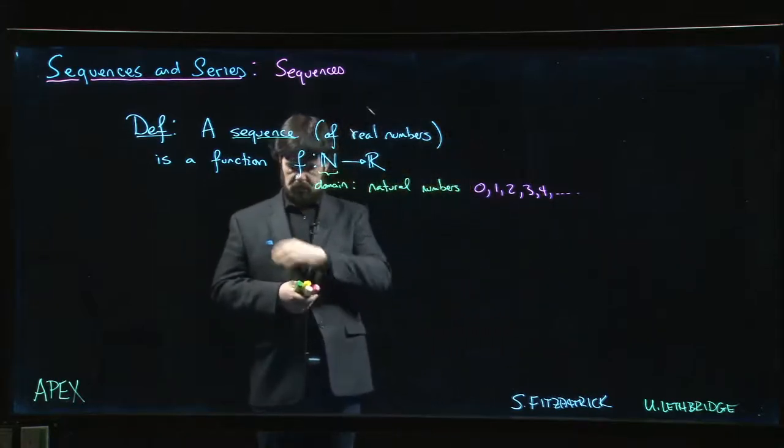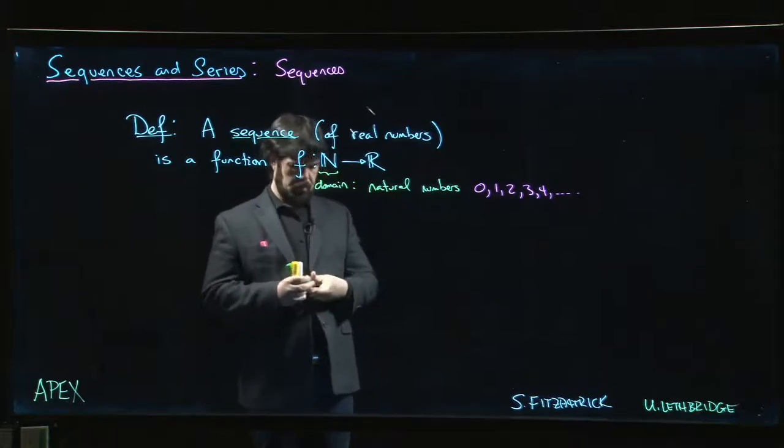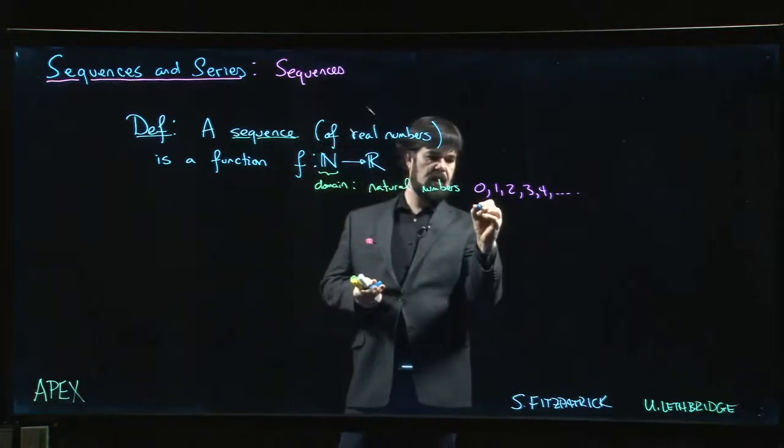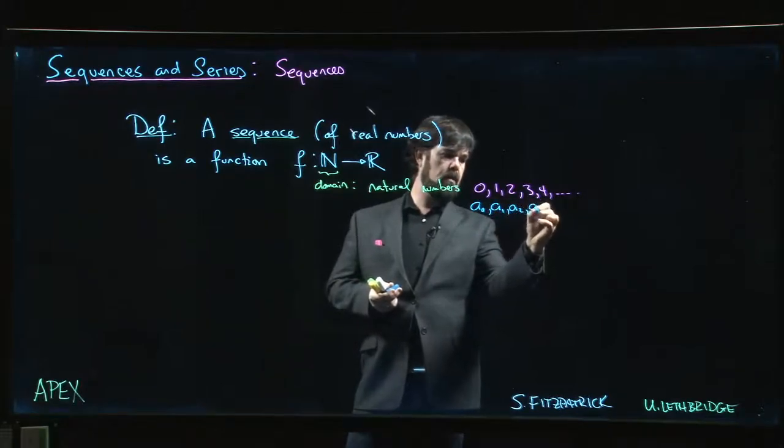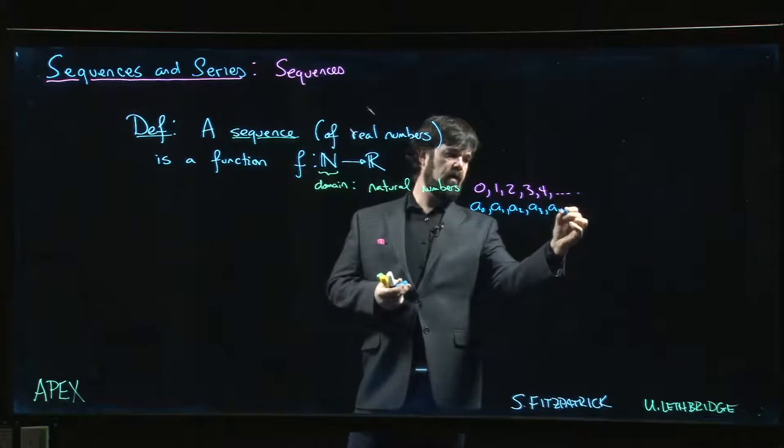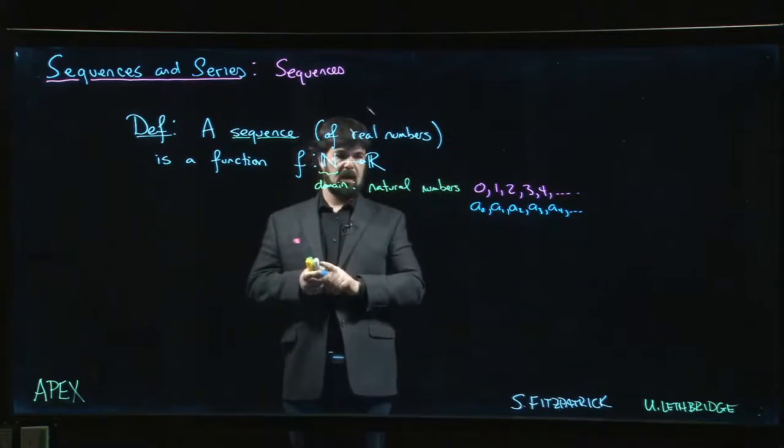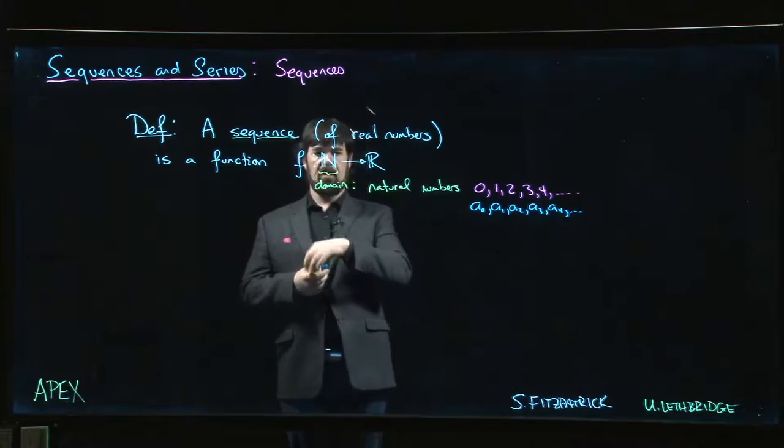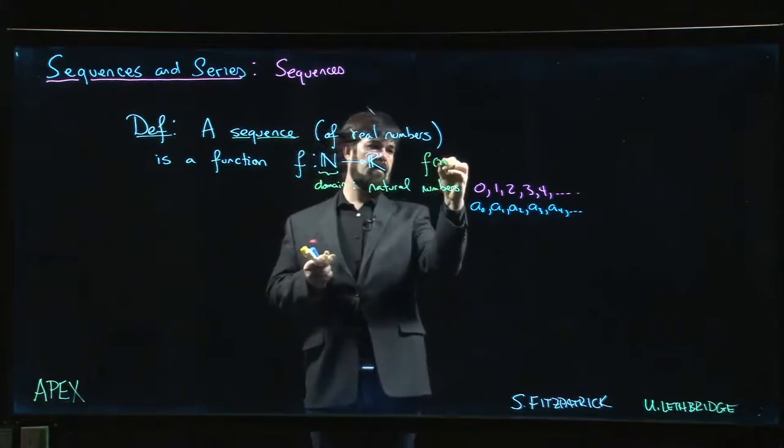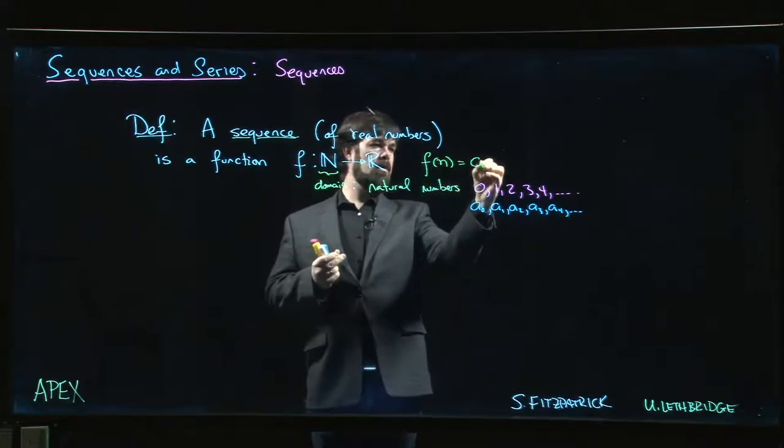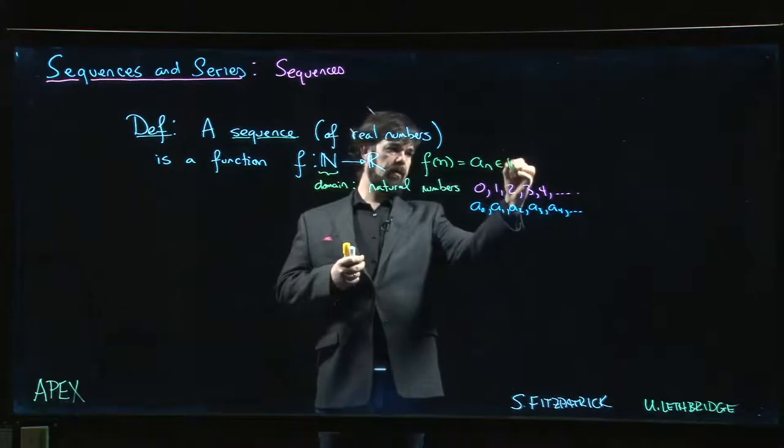So what we're going to have is something like, say, a_0, a_1, a_2, a_3, a_4, and so on. All right, so we might write it something like that. So in other words, we could say that f of a natural number is a_n. So a_n here is a real number.